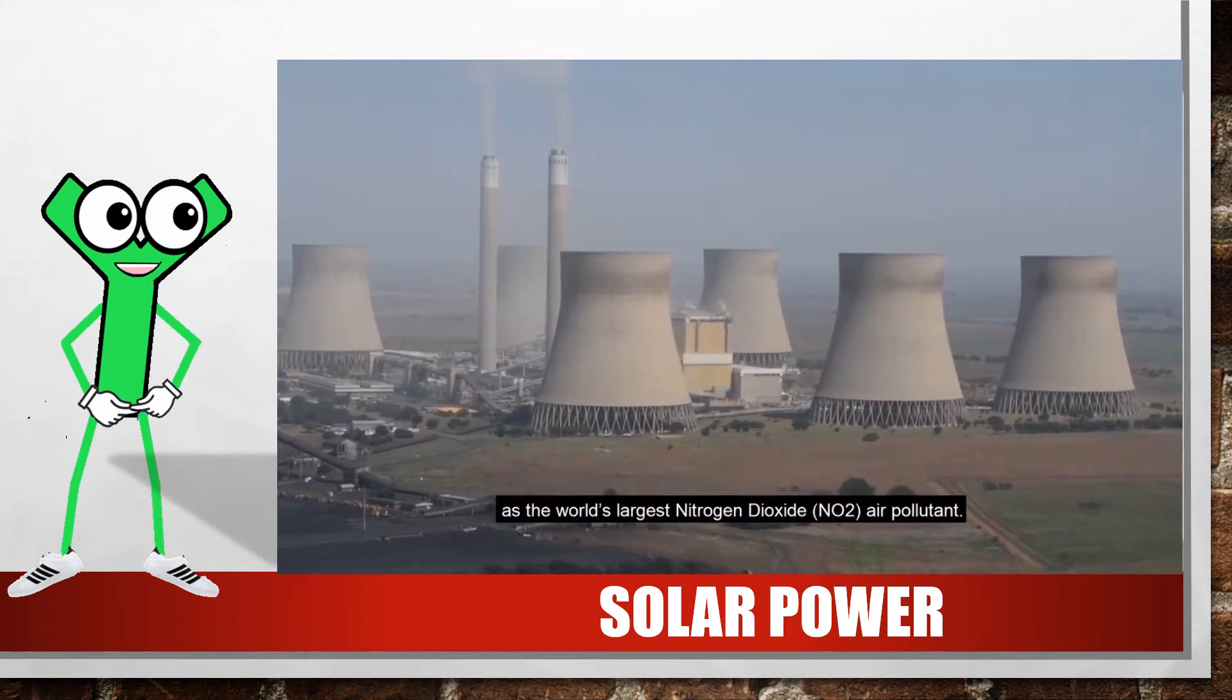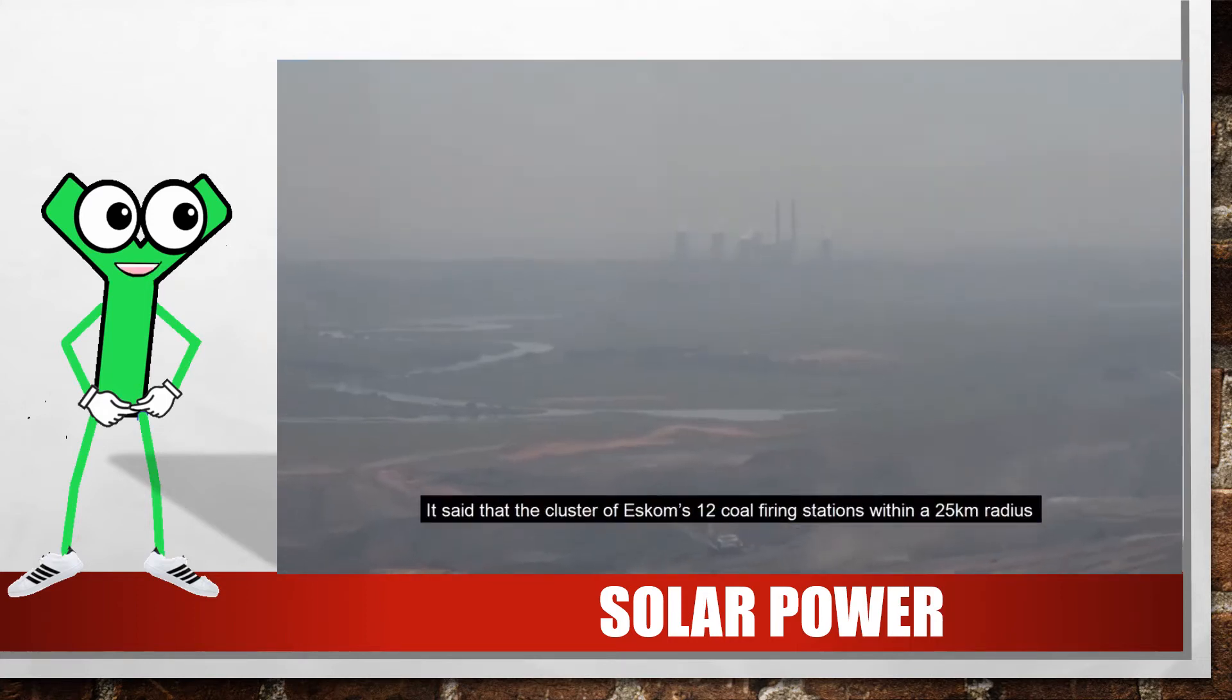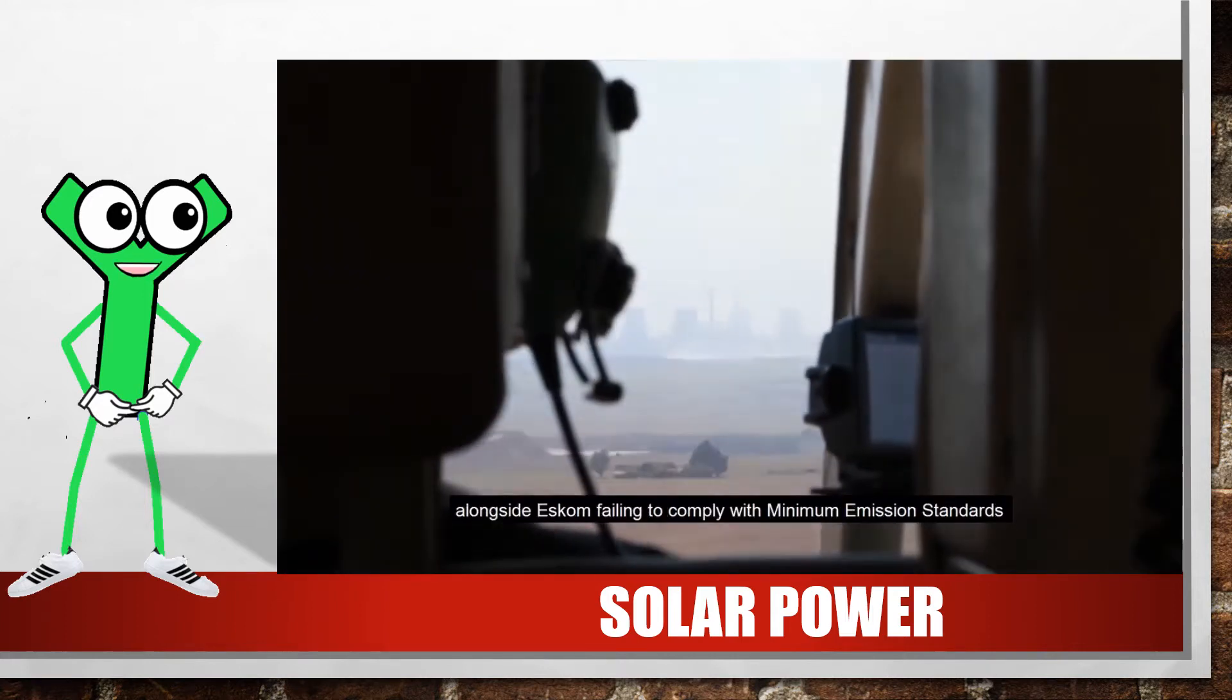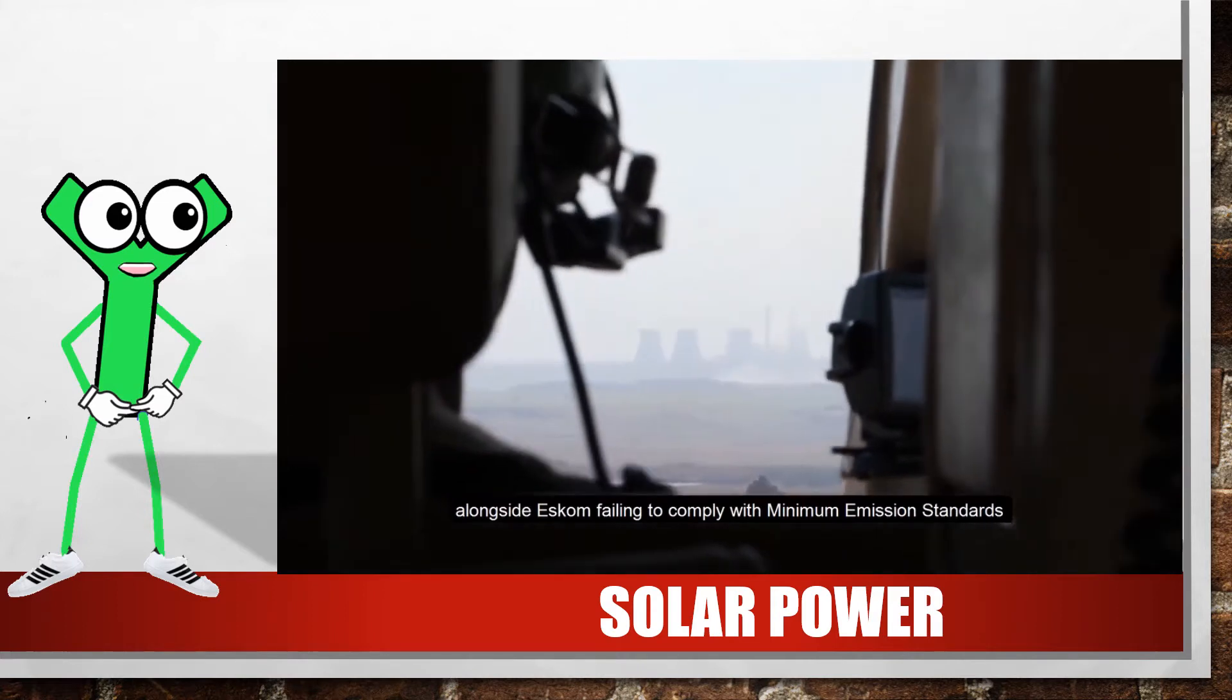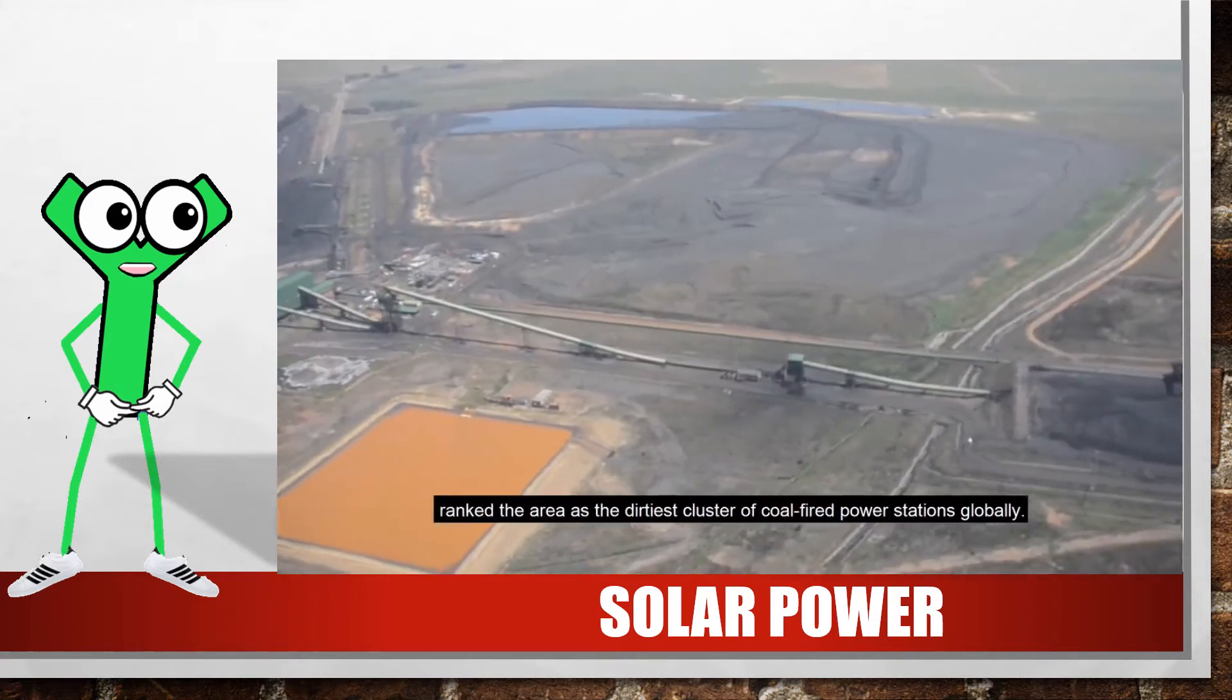Today's theme is solar power. Eskom currently mainly uses coal to generate power. However, coal is not a renewable source of energy and it releases plenty of carbon dioxide that's not good for us or the environment.